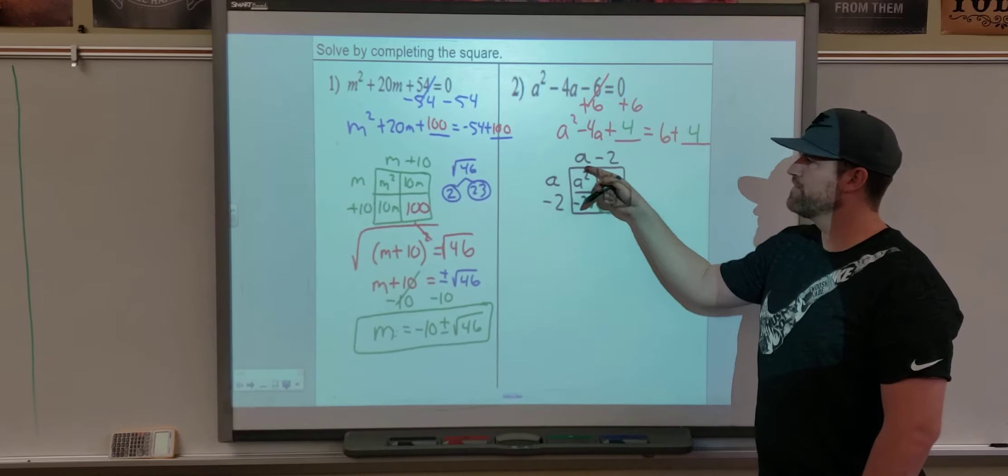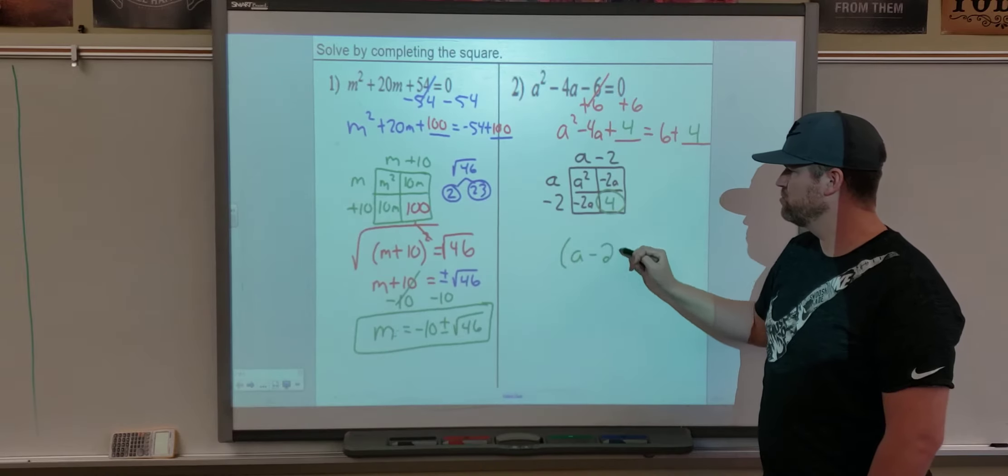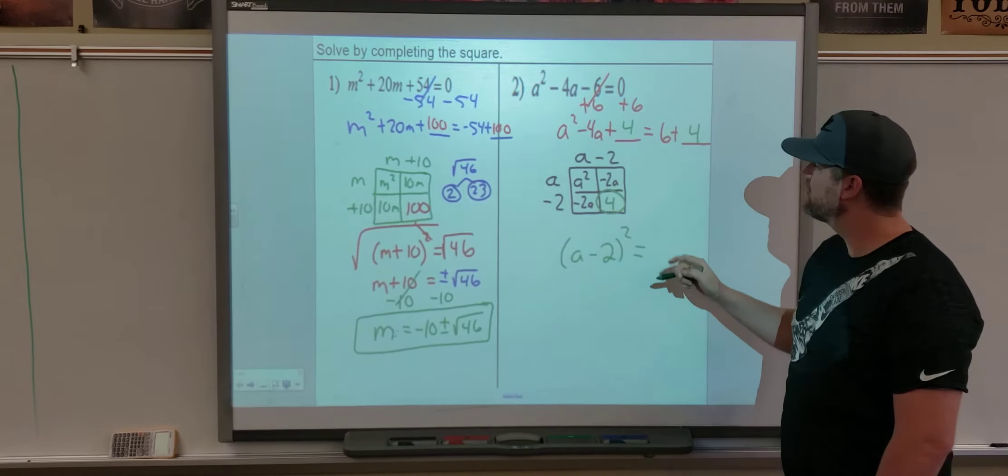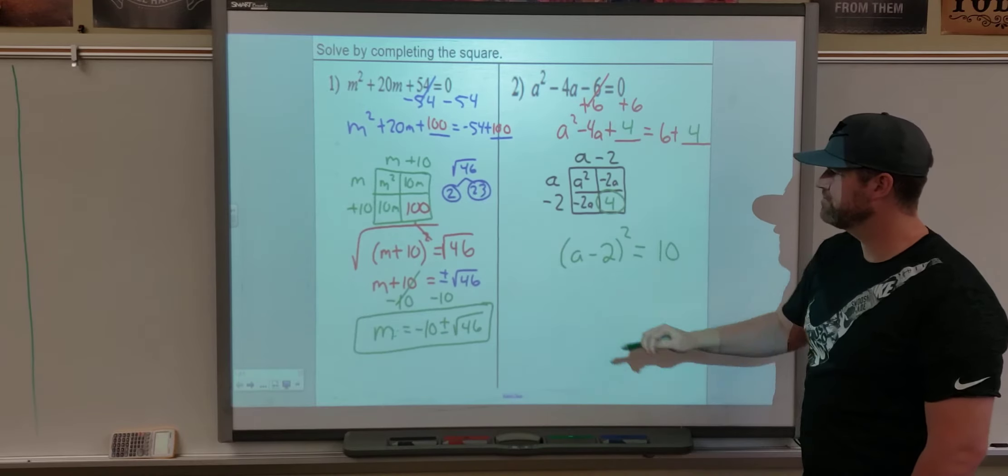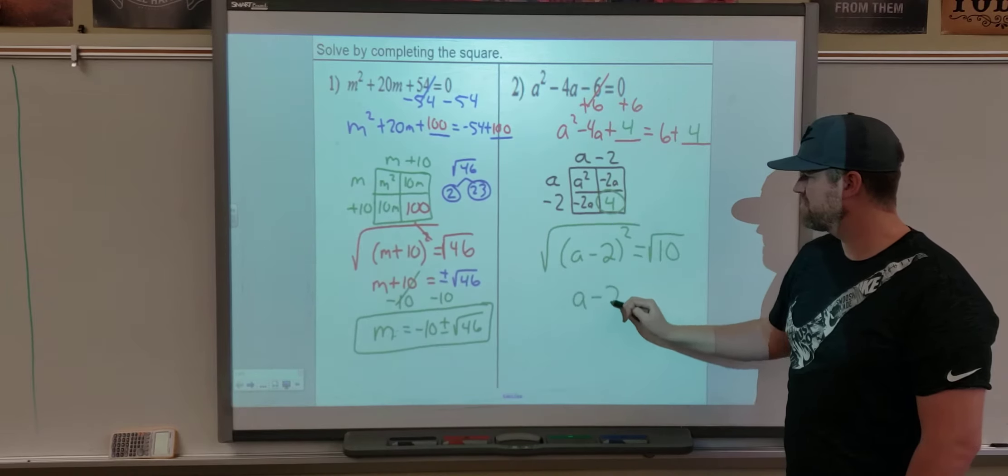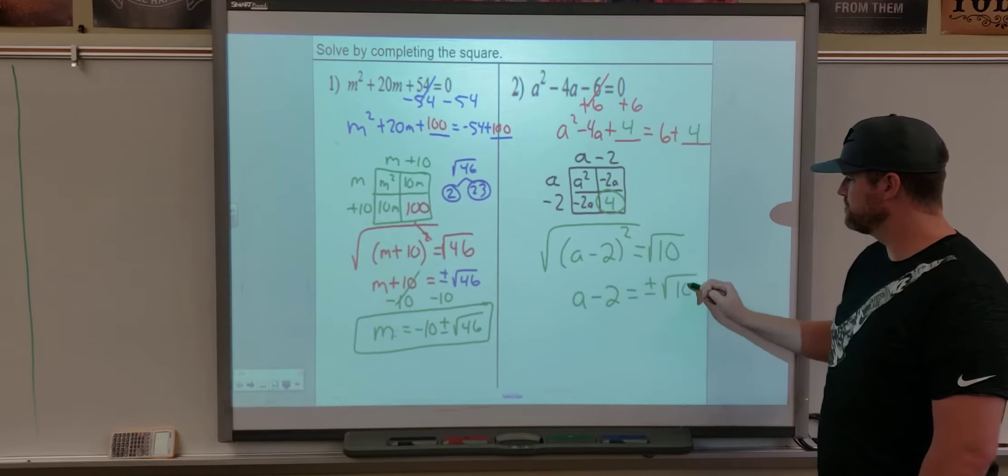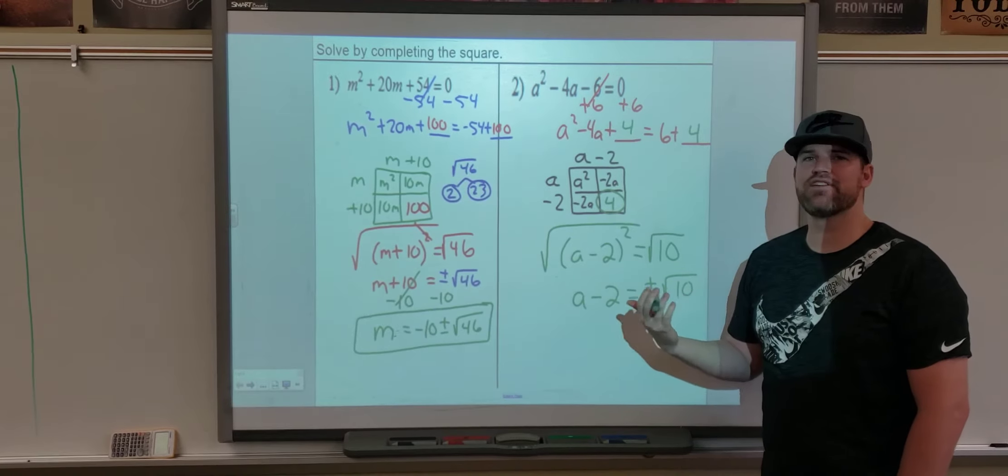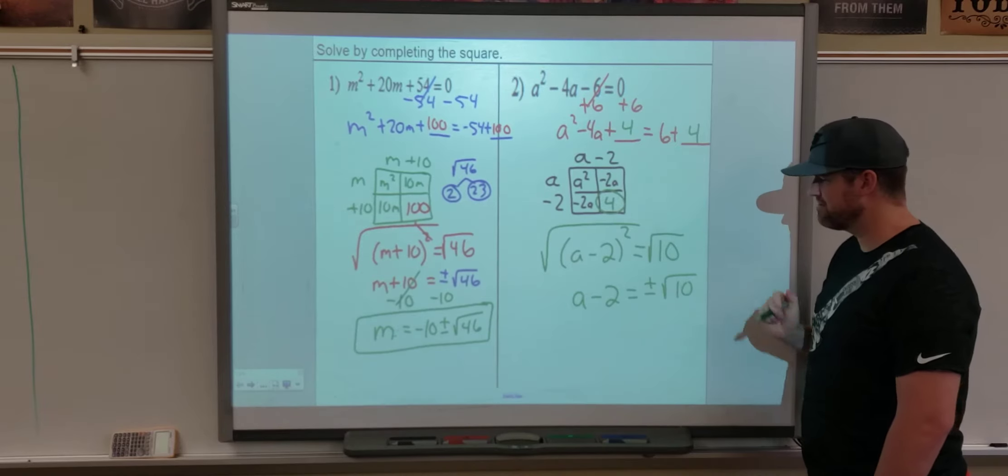This side now factors perfectly into this problem here. So it becomes A minus 2 squared. The right side is now 6 plus 4, which is 10. Take the square root of both sides, and we get A minus 2 equals plus or minus square root of 10. Because the only factors of 10 are 5 and 2, there are no pairs. It can't be broken down. We leave it as square root of 10.